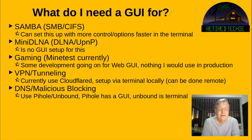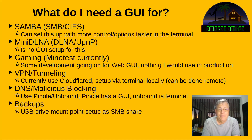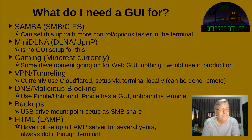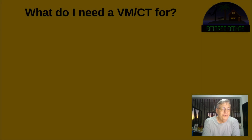DNS malicious blocking — I use Pi-hole, which has its own GUI, and I've never tried using it without one. I also use Unbound with it, and Unbound is another terminal-configuration application. Backups: USB drive mount point setup as a Samba share — see Samba above. And LAMP/HTML servers I really haven't been doing, but in the past that was all manual too — setting up the Apache configuration file, PHP, all of that was done manually.